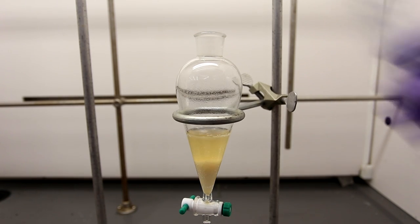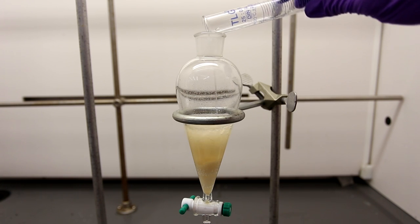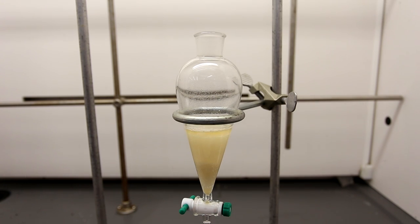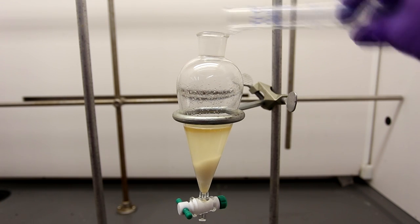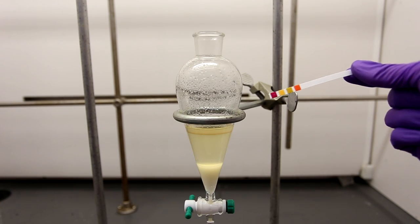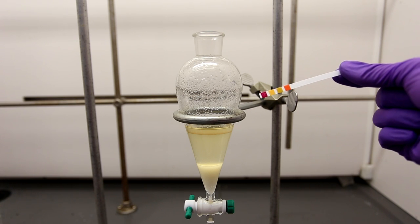Add only small volumes at a time with capping and shaking between each addition. You'll need to keep adding the sulfuric acid solution until the pH is around 0 to 1. The pH was tested and it was found that the pH was around 0.